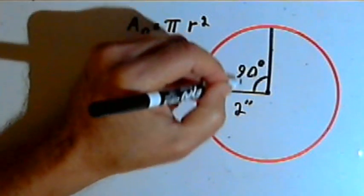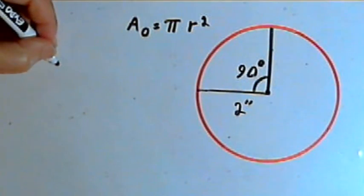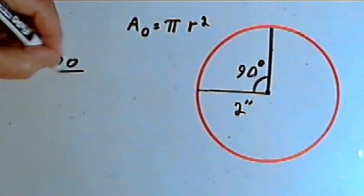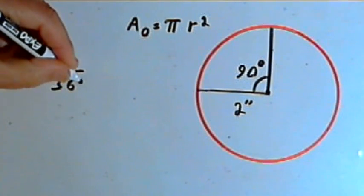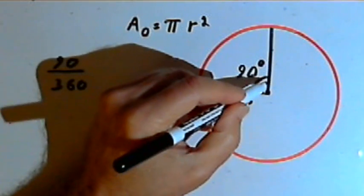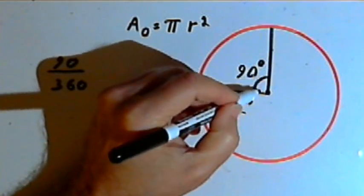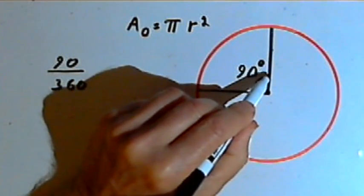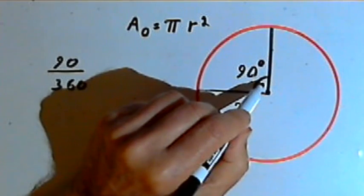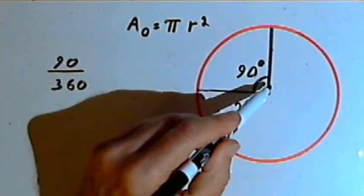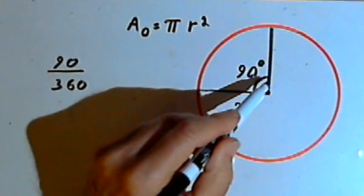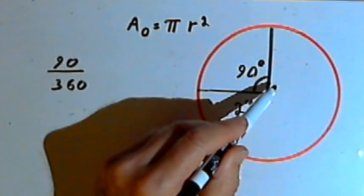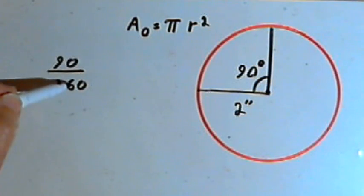So the portion of the circle that I'm dealing with is 90 over 360. In other words, the size of this central angle, the amount that is encompassed by these two radii, compared to the size of the entire circle, what we would have if we went all the way around the circle. So that's 90 over 360.